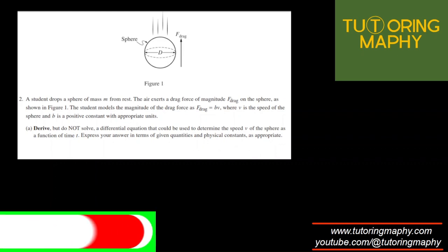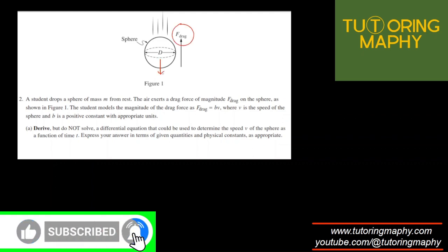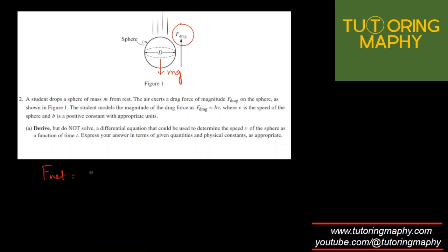So how will the FBD look like? Obviously one force is the F_drag which we can clearly see and one is mg. So what is the net force acting on the sphere? It will be the downward force minus upward force because it's falling down, so downward force should be written first. Then F_net. What is F_net? F is MA, right? So that will be equal to mg minus BV.